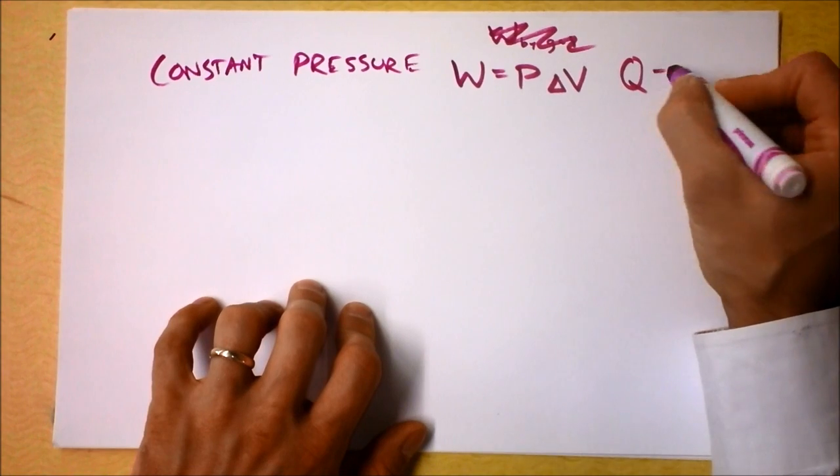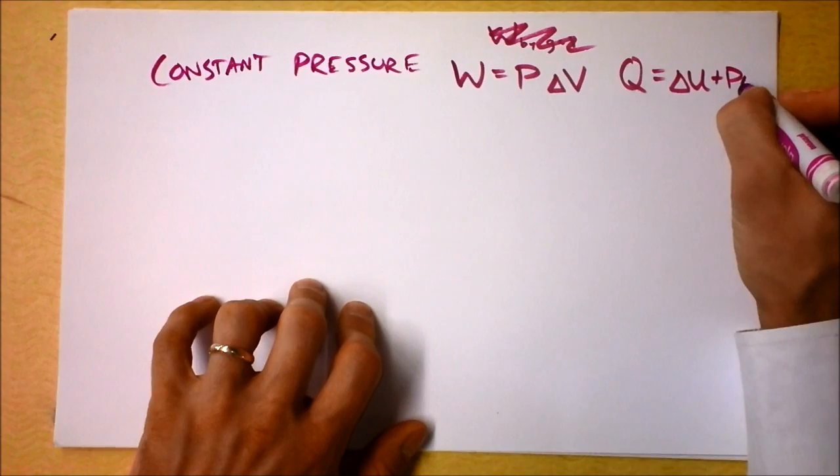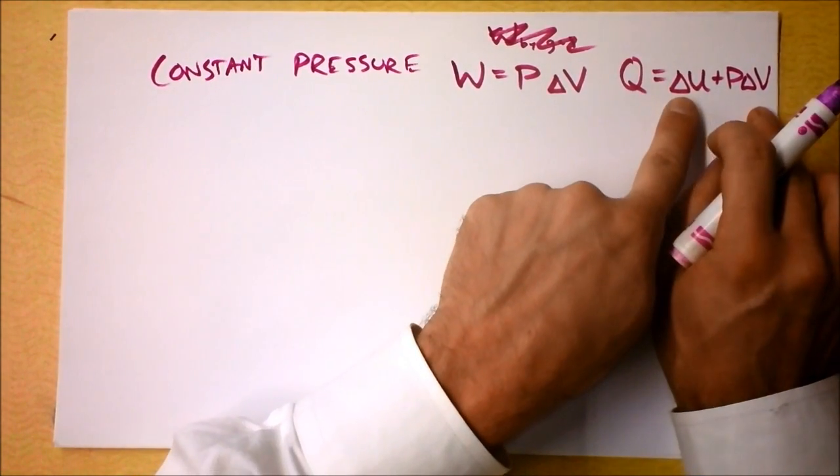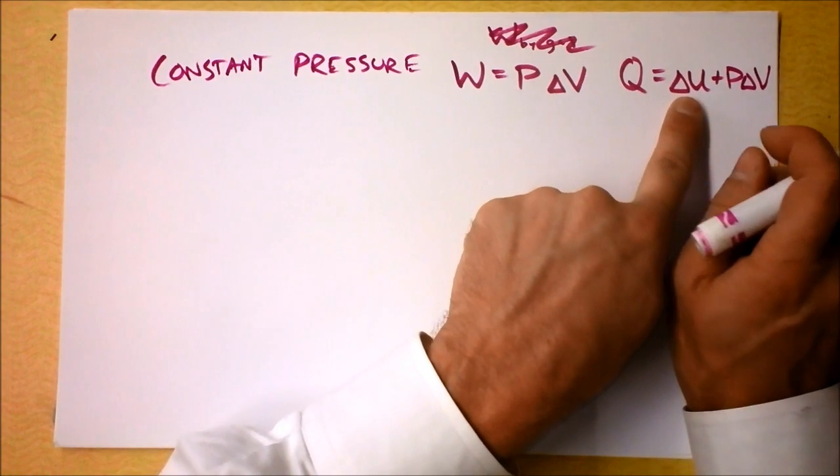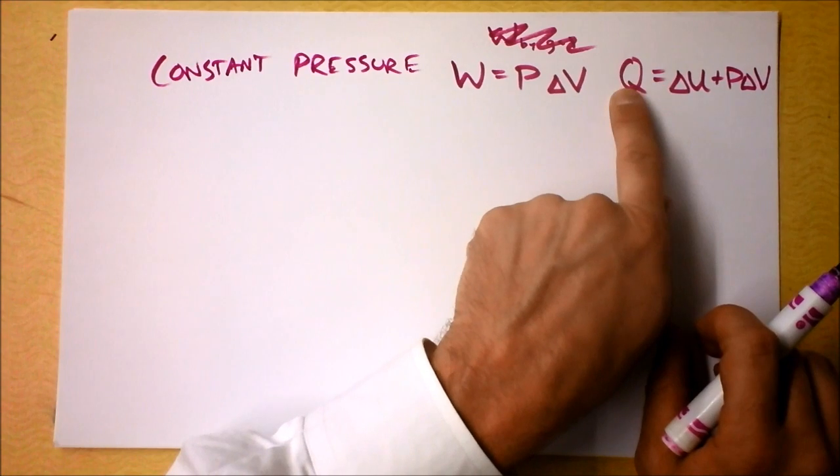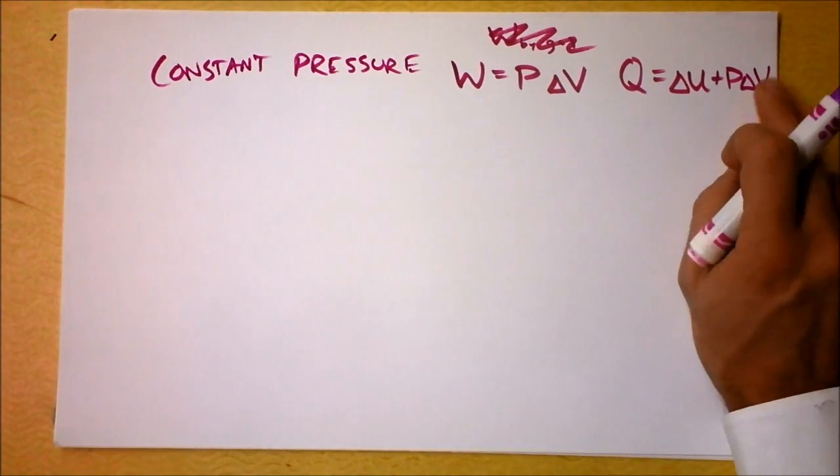And Q, the heat, then is the change in energy plus P delta V. That's just a conservation of energy equation. This actually says that delta U is Q minus P delta V. So the change in energy of the system is the heat that entered the system minus the work that the system has done.